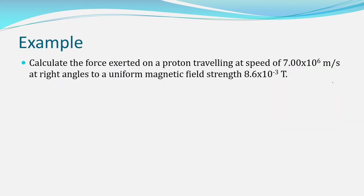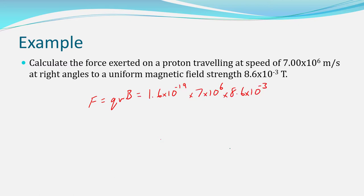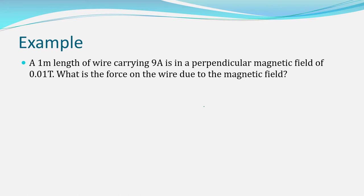Now that we know how to quantify those forces, let's do some basic calculations. In most situations you'll be told that the current or charge is moving perpendicular to the field to make it easy to solve. For a proton (charged particle), you apply F = QVB and you should end up with 9.63 × 10⁻¹⁵ newtons. For a current through a wire, apply F = BIL: 9 × 1 × 0.01 T gives you 0.09 newtons.